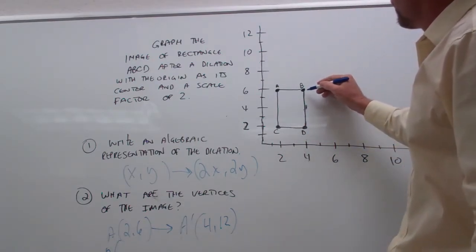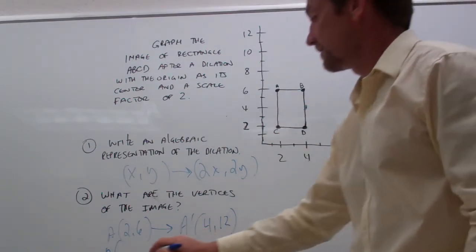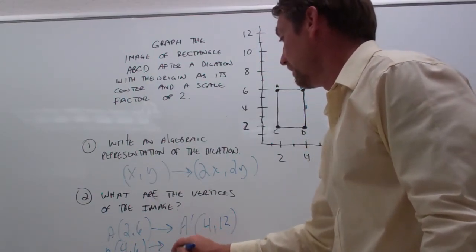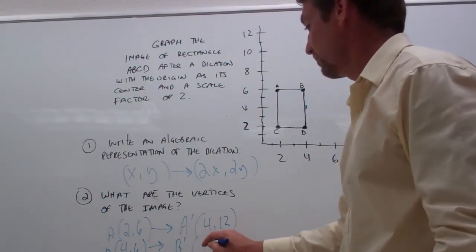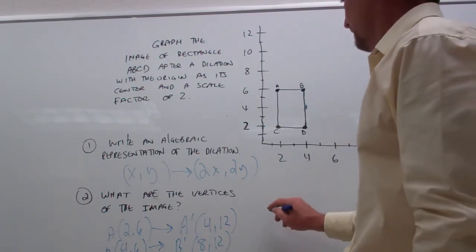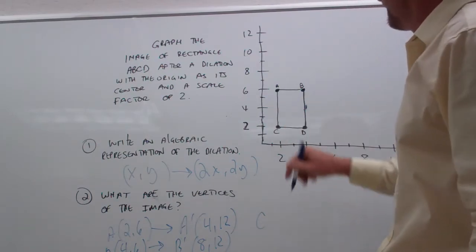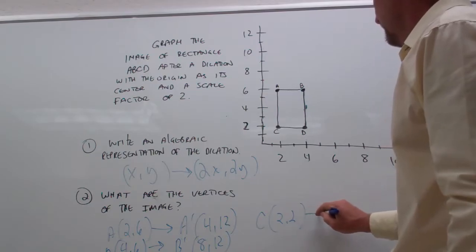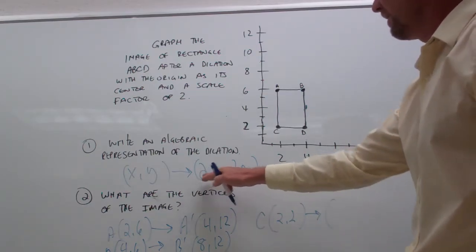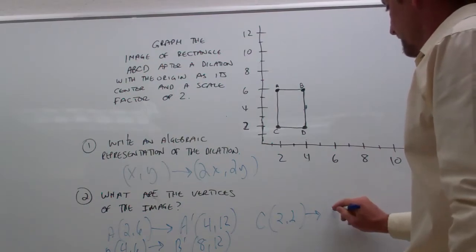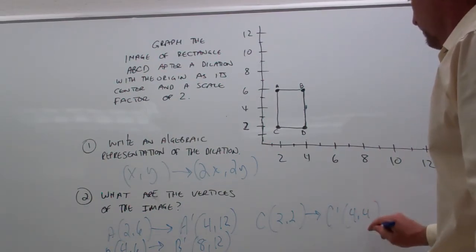And those will become B prime, will have coordinates of 8, 12. So, vertex C had coordinates of 2, 2, multiply both of them by 2, and they will become C prime, will have coordinates of 4, 4.